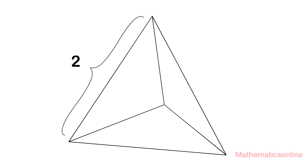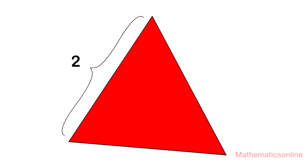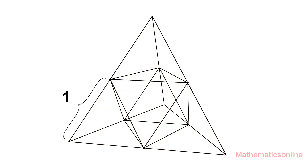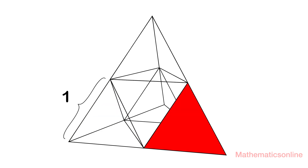To begin, let's start with a tetrahedron with a side length of 2, and we are going to take the midpoints of each edge. By connecting the midpoints we create smaller tetrahedrons with a side length of 1. So there are exactly 4 smaller tetrahedrons, as you can see.